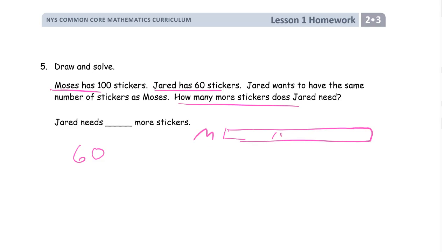Here's Moses. He's got 100 stickers. And Jared here has only 60, which is a little more than half. So how many more does he need to get the rest of the 100? You can probably tell right now. 100 minus 60 equals 40. Jared needs 40 more stickers. So you've got to have some kind of a labeled picture, either a number bond or a tape diagram like this one labeled. M for Moses, J for Jared. And this is the more that he needs. And you need a number sentence and there's your answer.